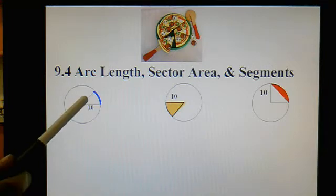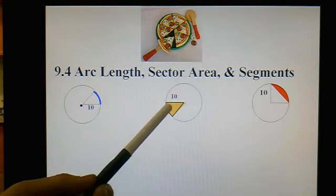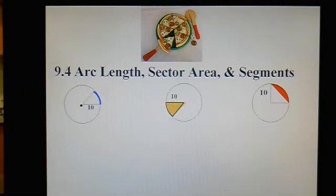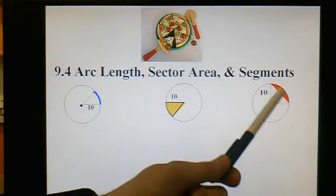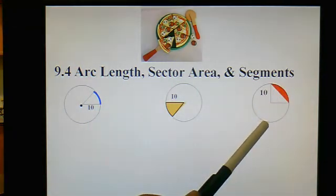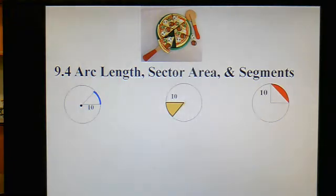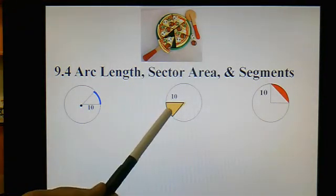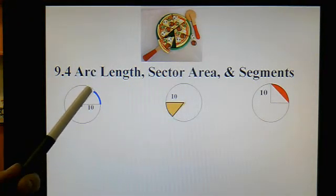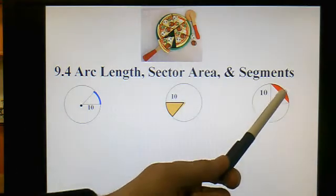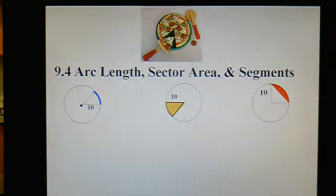And we're going to be basically looking at three different types of problems. One is finding length, finding this blue distance, finding a curved length, which you've never done before other than a circumference. Finding an area of this little piece of pie. And finding a sort of a little sliver of a circle here, which we'll talk about, they call that a segment of a circle. So this is called a sector. This is called arc length. It's a curved length. And this is called a segment of a circle, which I always think of as like a little sliver on there.